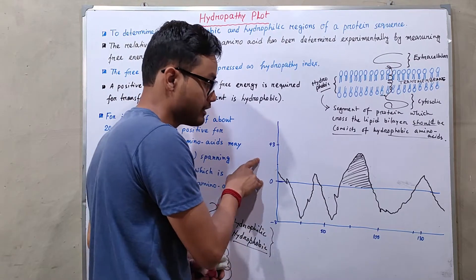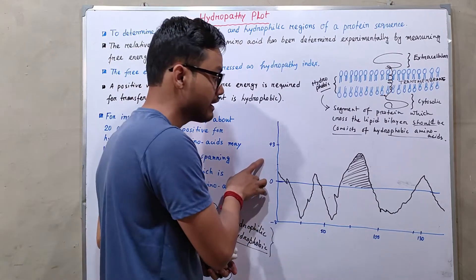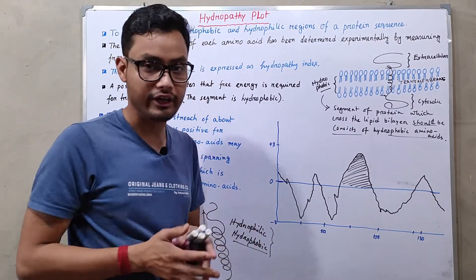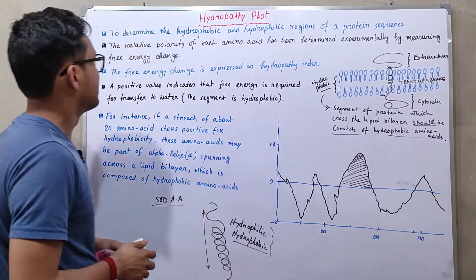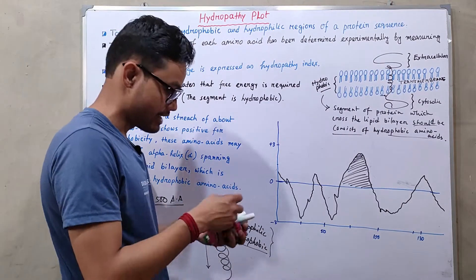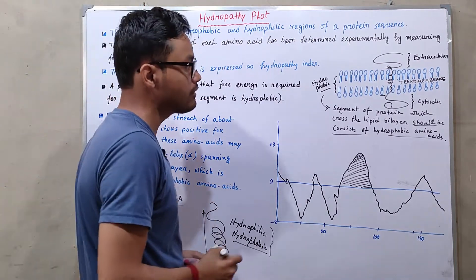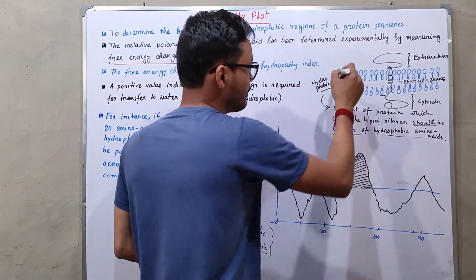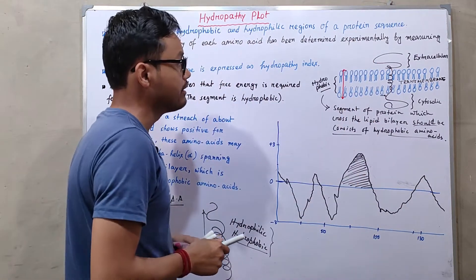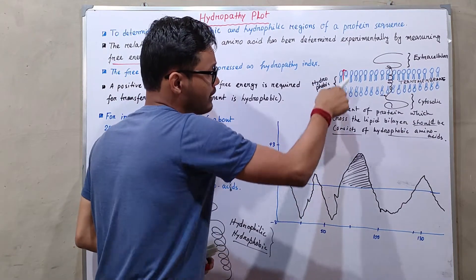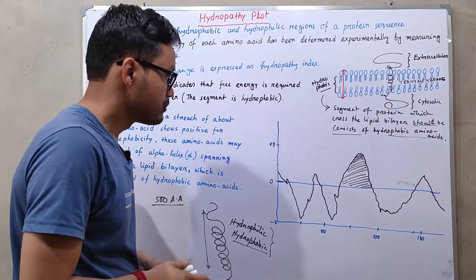After observing the hydropathy plot or hydropathy index, we can conclude whether a segment of the protein crosses the lipid bilayer or not. The relative polarity of each amino acid has been determined experimentally by measuring the free energy change. Whenever a segment of the protein crosses the lipid bilayer, a free energy change occurs, and by measuring this we can conclude if that segment crosses the bilayer.